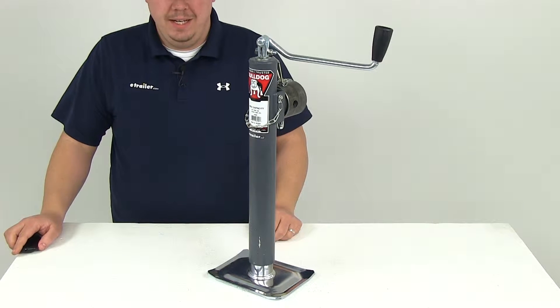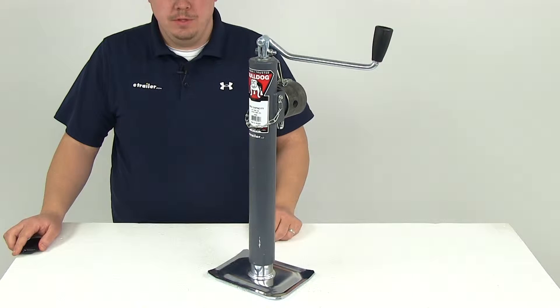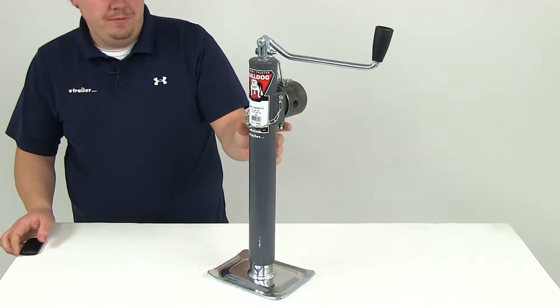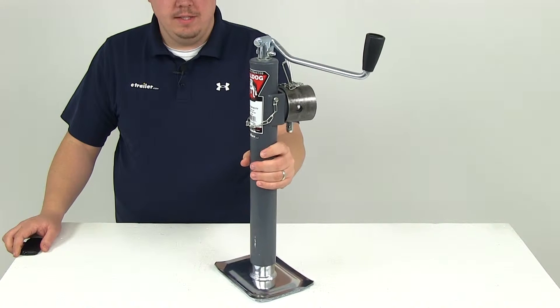Today we're going to be taking a look at part number BD198200. This is the Bulldog round pipe mount swivel jack. It's going to provide 15 inches of lift and it's rated at 7,000 pounds.